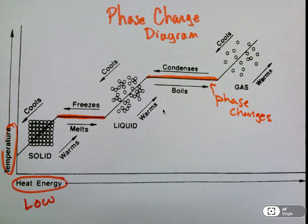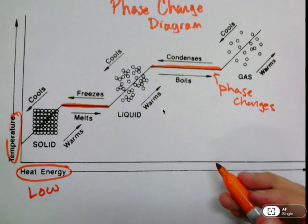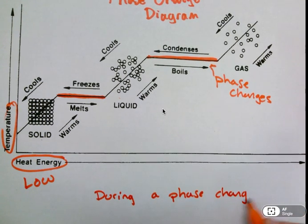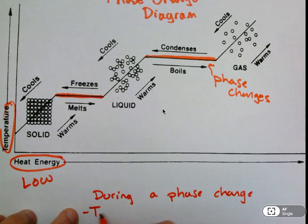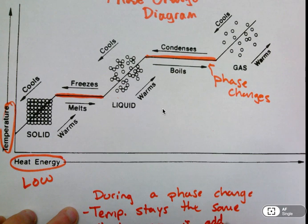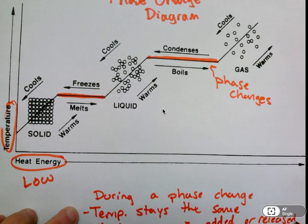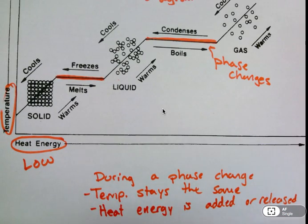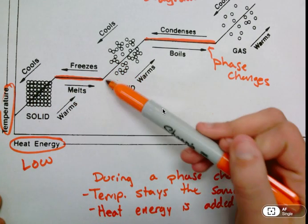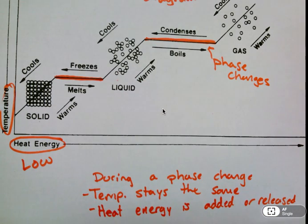The interesting thing about this, or the thing that you need to get from this particular set of notes, is that during a phase change, temperature stays the same. What doesn't stay the same is heat energy. Heat energy is either added or released, depending on which way you're looking at. Temperature is staying the same, which might seem a little counterintuitive. We know we have to heat up a solid in order for it to become a liquid, but what we don't see is that during that time where you have some solid and some liquid, that temperature is going to remain constant. The temperature itself will not increase until you fully change to the next state of matter.